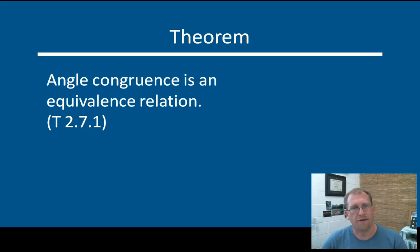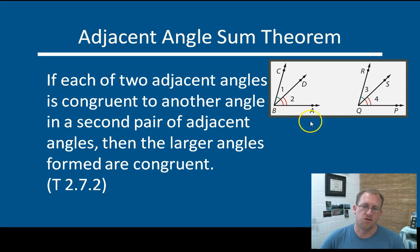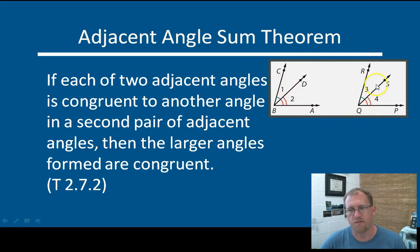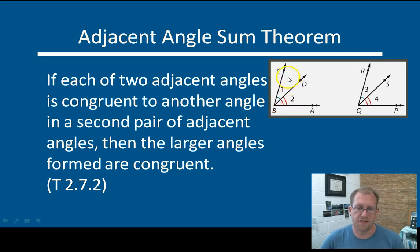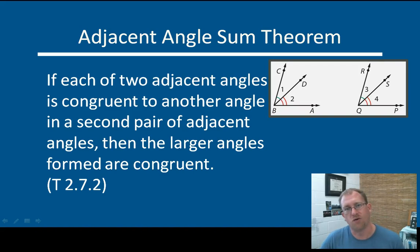Angles can work that way. So the next idea is the adjacent angle sum theorem: if we have two angles, angle 1 and angle 3, that are congruent to each other, and angle 2 and angle 4 which are congruent to each other, then the larger angles that they form — 1 plus 2 — will be equivalent to 3 plus 4. It's pretty easy to picture: if this is A and this is A, and this is B and this is B, then A plus B equals A plus B. If they're the same thing, then they add up to the same thing. That's the adjacent angle sum theorem.